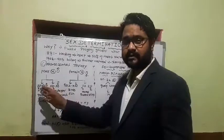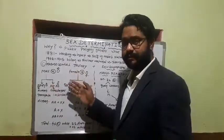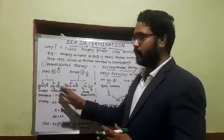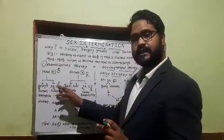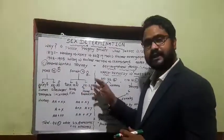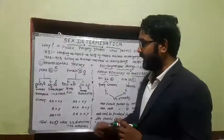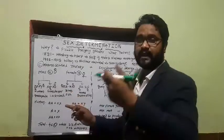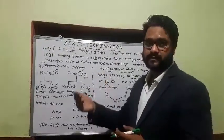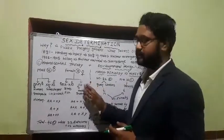Now the opposite scenario to XX-XO is the ZZ-ZO system. Just as in XO the male has only one chromosome, in ZO the female has only one chromosome that decides sex of the next generation, while males carry ZZ — two chromosomes. This classic example is seen in moths and butterflies. So to revise: XY — grasshopper and human; XO — grasshopper and cockroach; ZW — birds and fish; ZO — moths and butterflies.